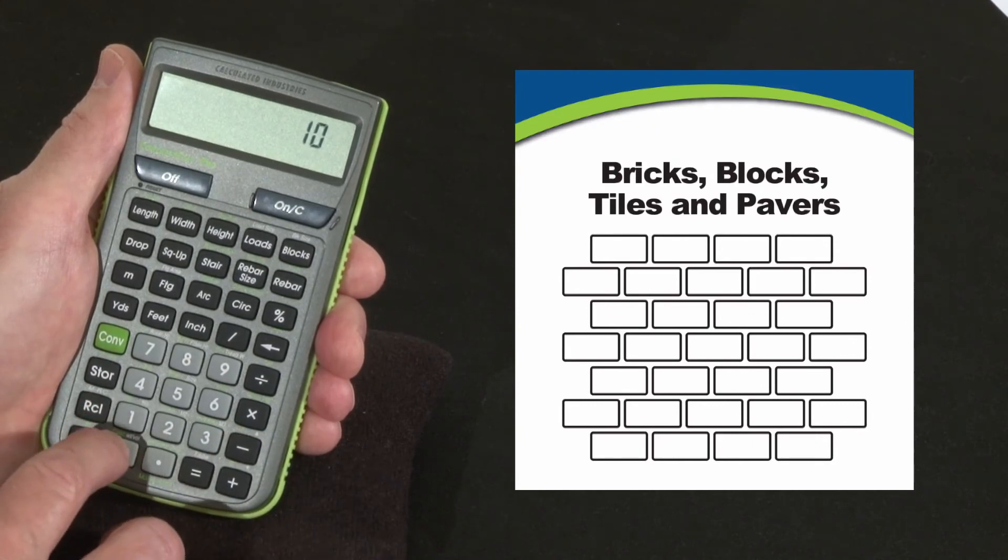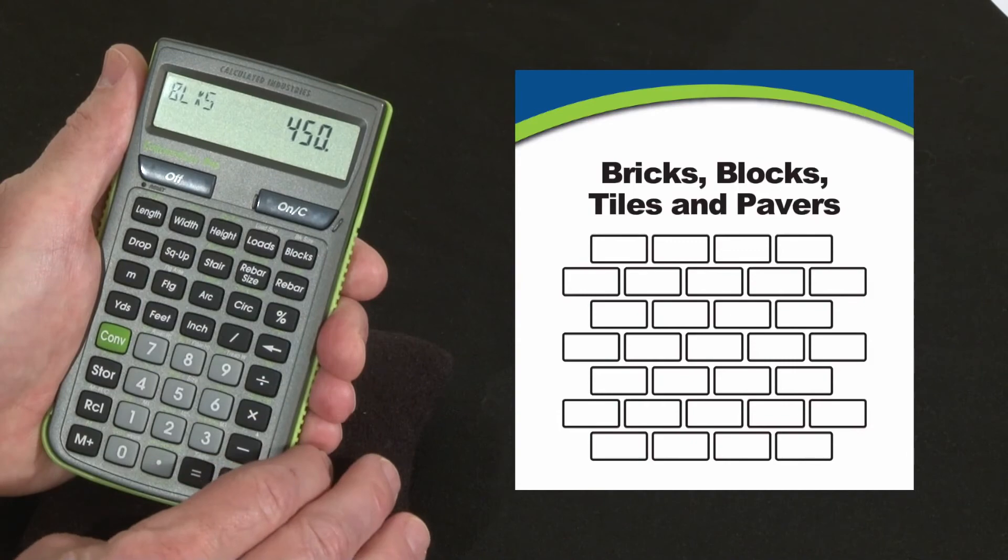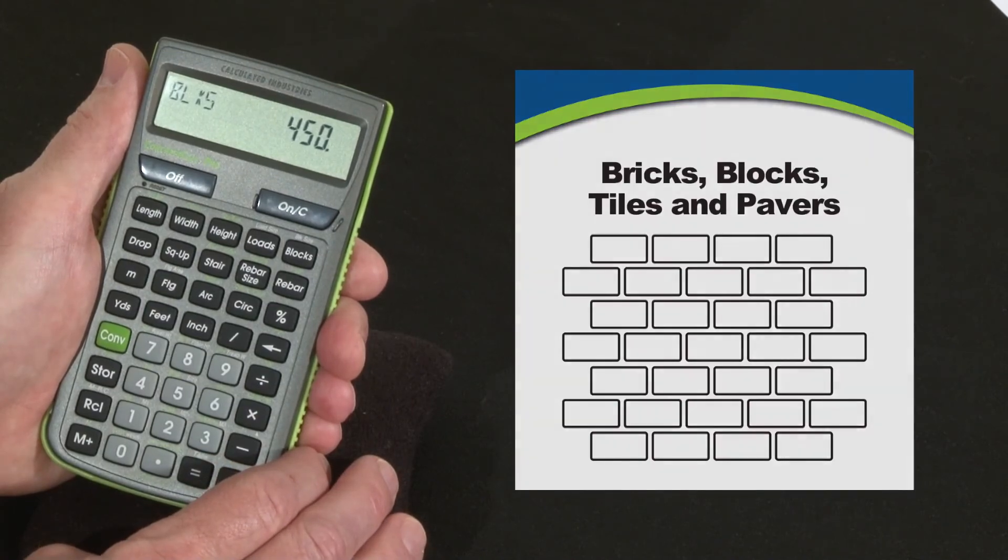We're going to do 100 square feet. Feet, feet is our area. Press blocks. We're going to need 450 of those 4 by 8 inch pavers.